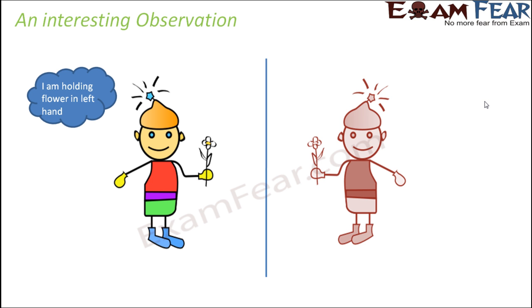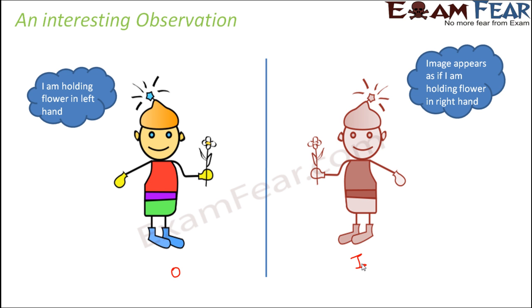Now let us talk about something very interesting. Have you ever observed that when you stand in front of a mirror, you see an image identical to you, but there is something very unexpected? If you are standing with a flower in your left hand and you stand in front of the mirror, the image appears as if you are holding the flower in your right hand. Similarly, when you hold something in your right hand, in the image it appears to be on your left. This is a fascinating effect — but why does this happen?